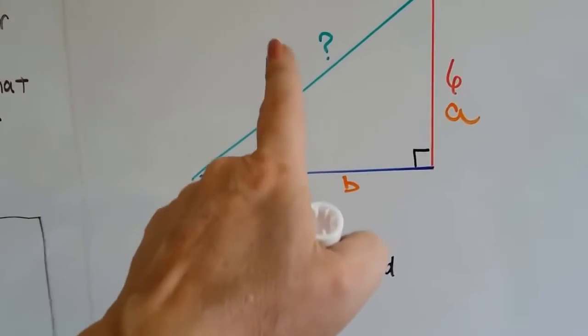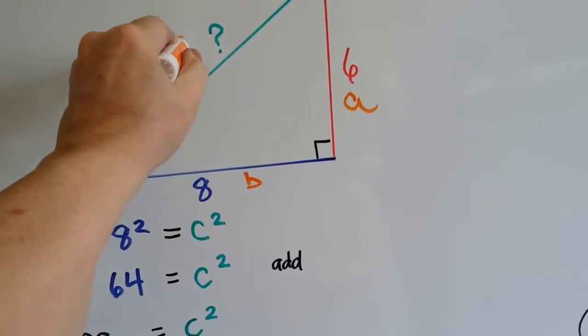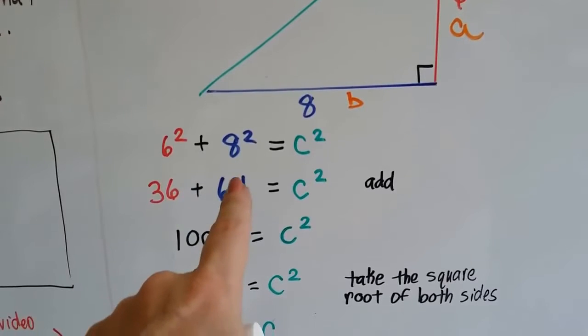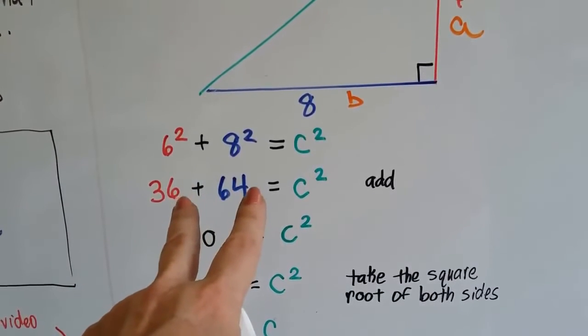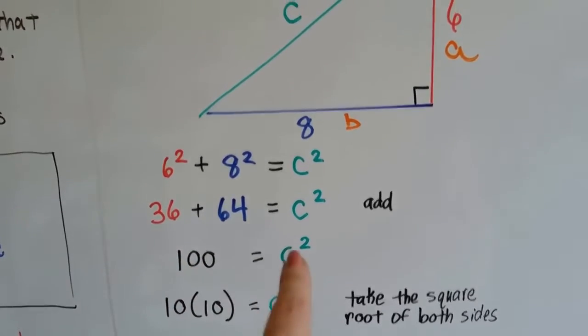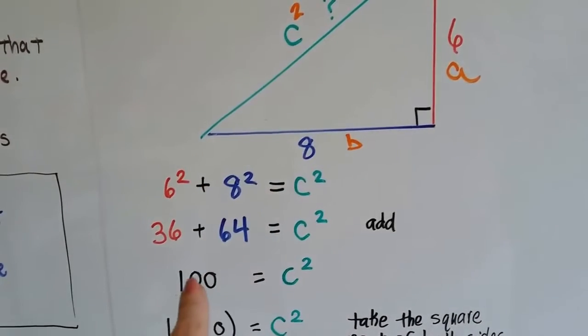Not just c, but c². Big difference. So we add 36 and 64. That's 100. So we know that c² = 100.